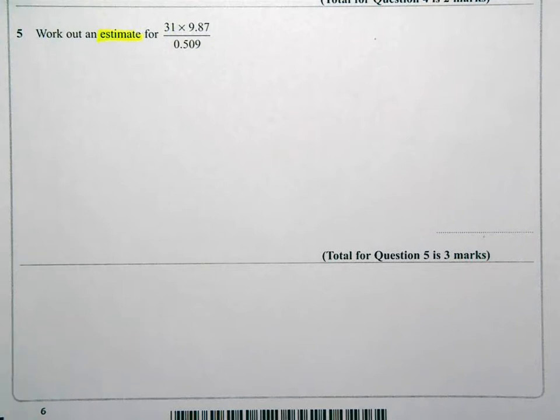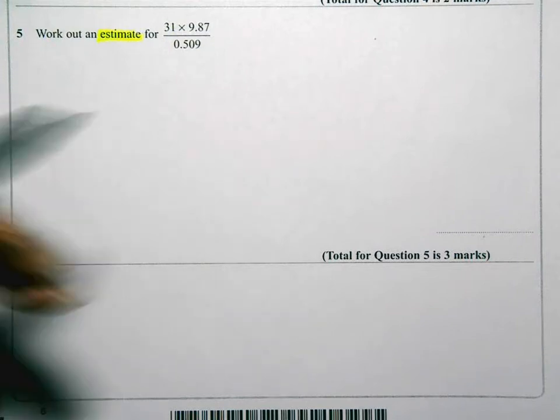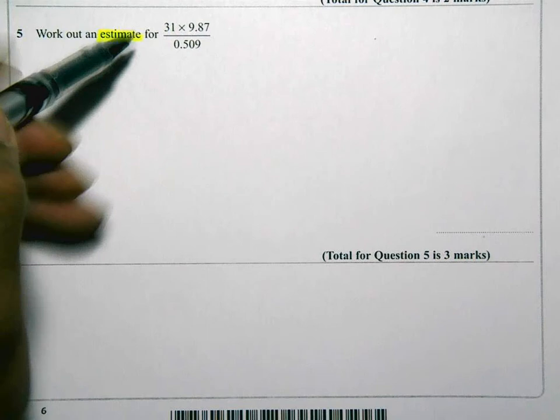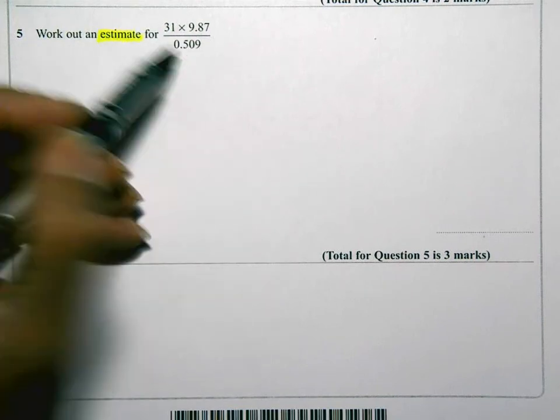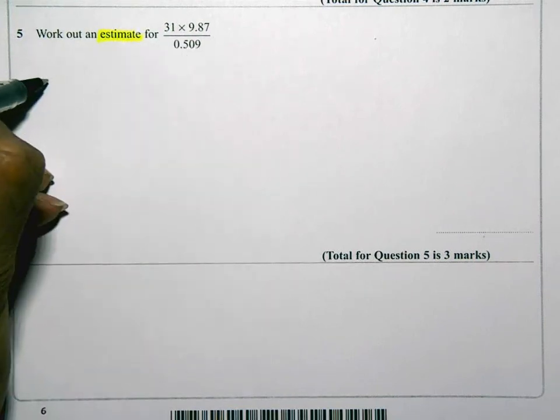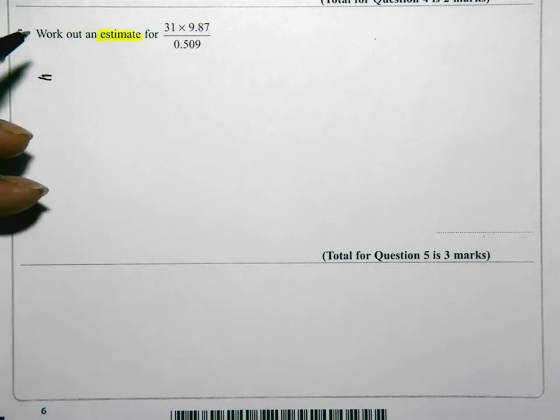Now this is a pretty standard type question. The first thing you have to do in any question of this type is, all the numbers, round them to one significant figure. That means it's just one number and everything else is zeros, but it needs to represent the size of that number.